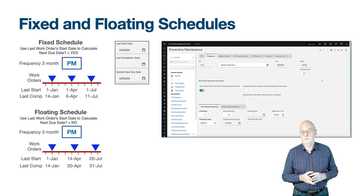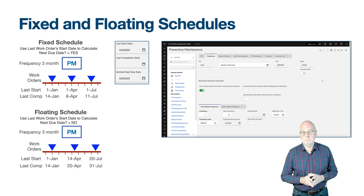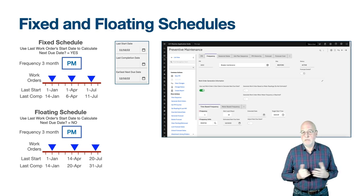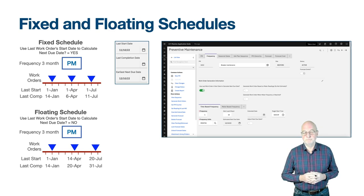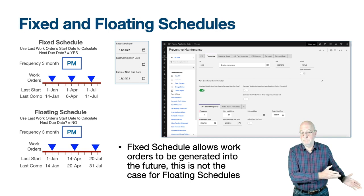As a floating schedule waits for you to complete the previous work order, you cannot generate work orders more than the frequency ahead of time. While there is still an open work order for the PM, you will receive error message BMXAA3191E: PM IC11460 is not due yet, or it does not fall within the active season. For a fixed schedule, you can generate work orders into the future, though this is not good practice.